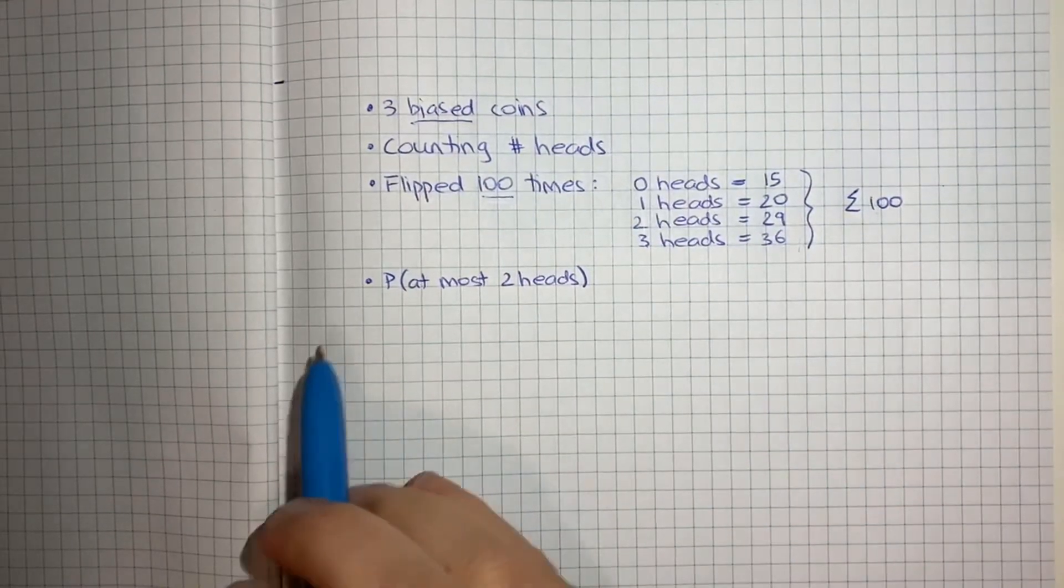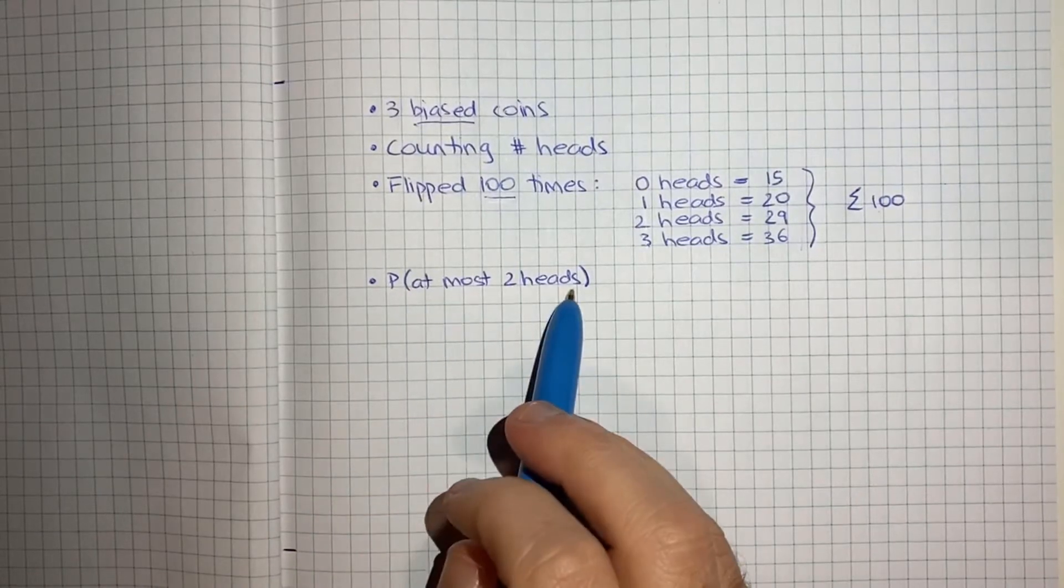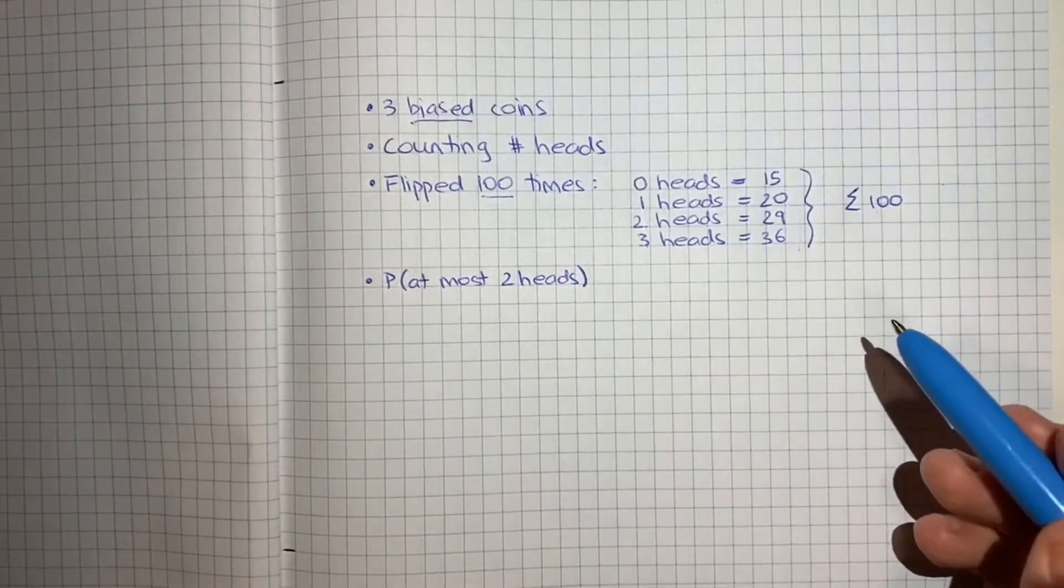So the question asks us, what's the probability that we would get at most two heads after flipping the three coins?